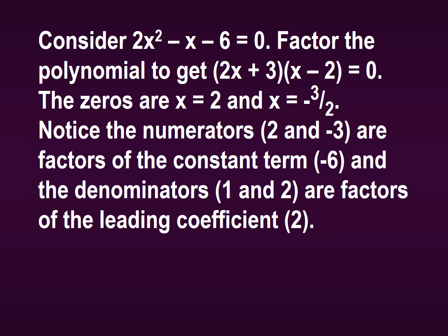Let's consider this polynomial: 2x squared minus x minus 6 equals 0. If we factor that polynomial, we get 2x plus 3 times x minus 2. According to our zero product property, the zeros are x equals 2 and x equals negative three halves. That property says that once you have something equal to zero, you can set both factors equal to zero and solve for x. So x minus 2 equals 0 gives x equals 2, and 2x plus 3 equals 0 gives x equals negative three halves. These are the zeros, which we also call the roots of this polynomial.